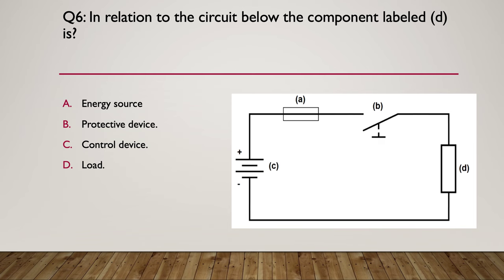Question six, in relation to the circuit below the component labeled d is what? A, an energy source. B, a protective device. C, a control device. Or D, a load. So pause as you think about that. So the hint is, list the functions of each of the parts of the circuit. See if you can name them all. If you can name them all you'll probably get the answer correct. So the answer is the rectangle is the symbol for a resistor and a resistor is a load. So the answer was D, load.